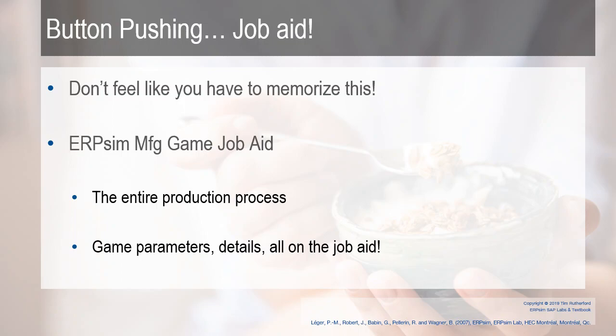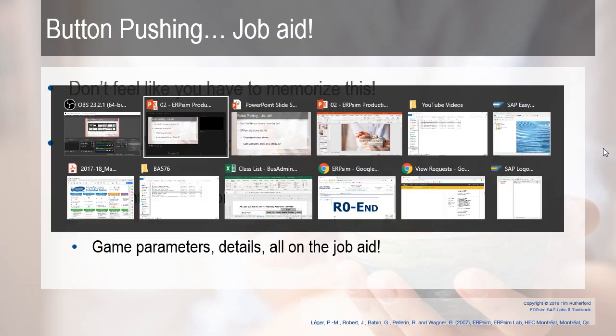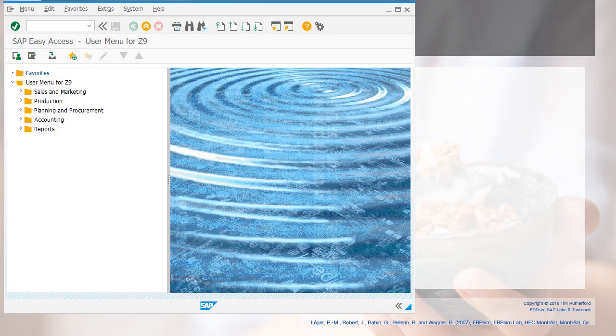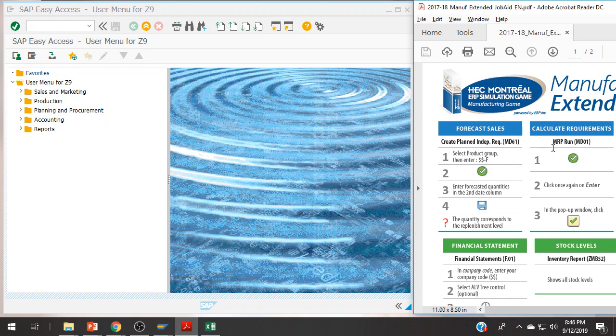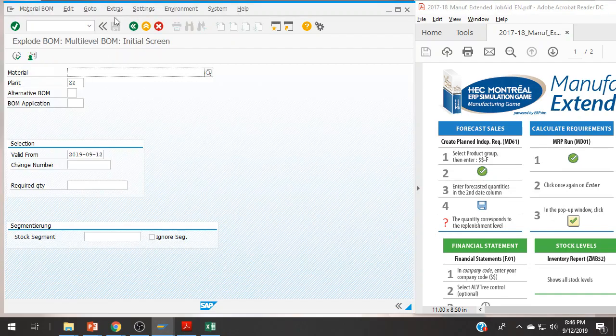Realize this is just button pushing that we're doing here. There is a job aid — don't feel like you need to memorize everything that's happening. The ERP-SIM manufacturing game job aid covers the entire production process, assumes you know what you're doing, and gives you a reminder. The job aid also gives you the parameters and details, and everything really ends up being on the job aid. We have the SAP GUI and the job aid here, and I'm going to start in the bill of materials.